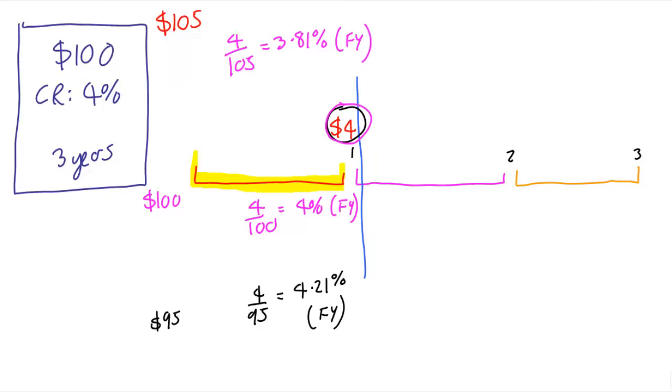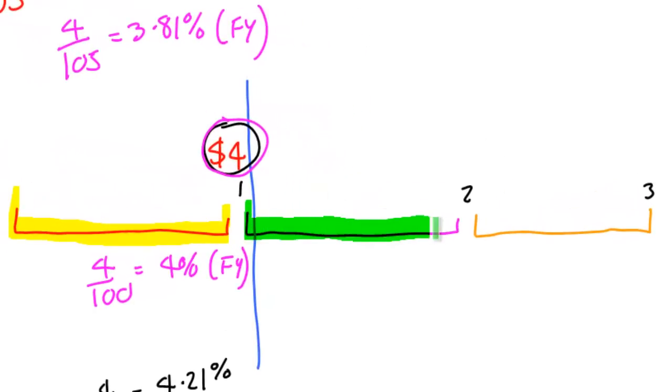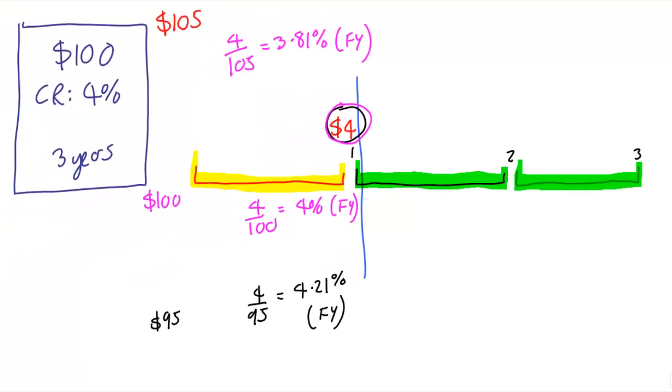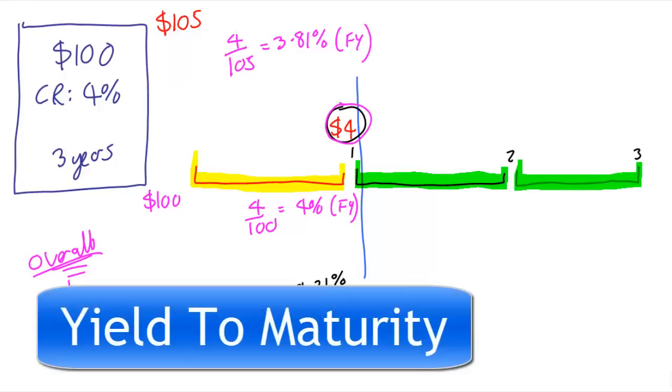What about these other two years? This is the problem that we need to solve. There's other things going on here that we need to take into account into what you might call an overall yield rate. And the name for this overall yield rate is typically yield to maturity. Now some people in the UK call this gross redemption yield. But most people know this as yield to maturity or YTM.